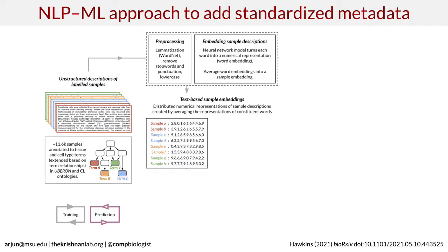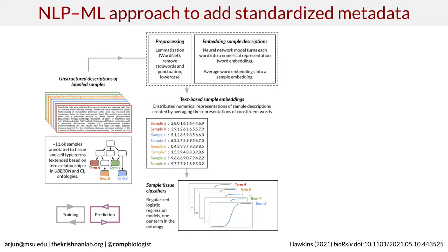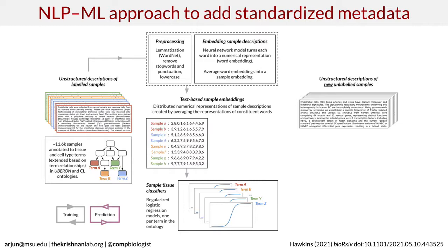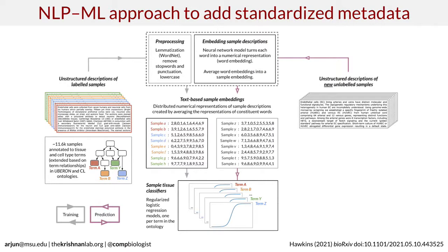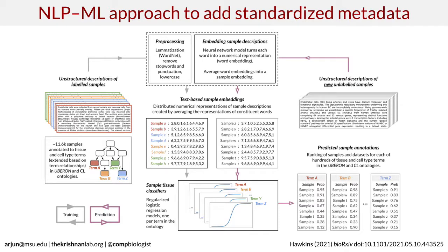Once we have a single embedding per sample — numbers that encompass its entire description — we feed them as feature vectors into a machine learning model. We trained logistic regression models for every tissue we had data for, where each model answers: given the sample's text embedding, does it belong to a particular tissue or not? Once trained, you can bring in any new sample, apply the same pre-processing to get its text-based representation, feed it to these pre-trained models, and get a probability that the sample belongs to each tissue. We call this entire framework NLPML — natural language processing combined with machine learning.